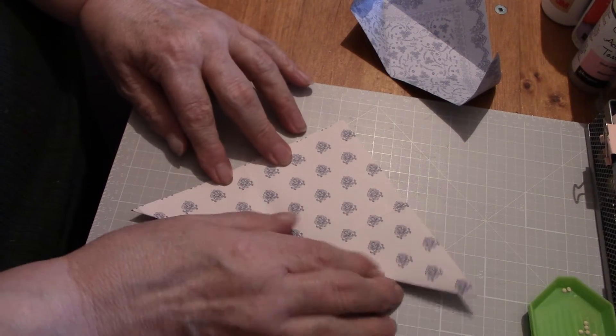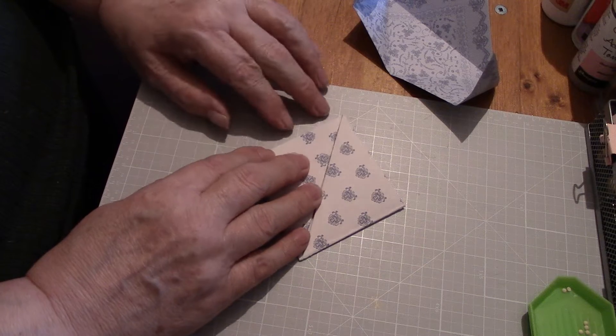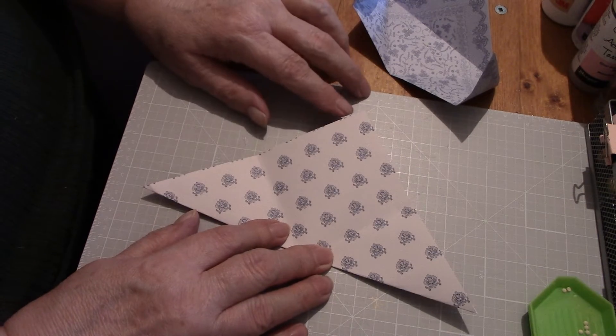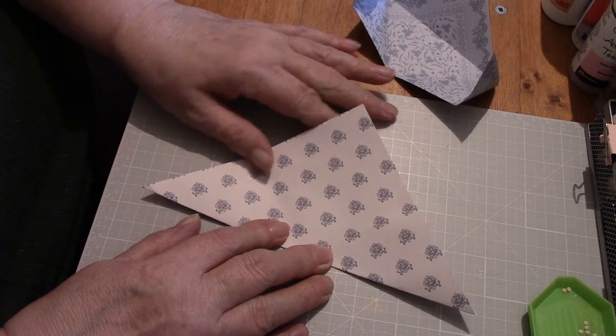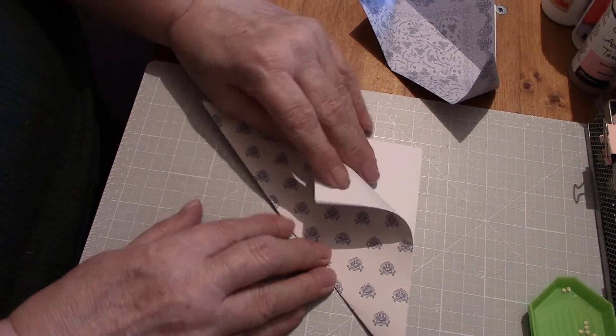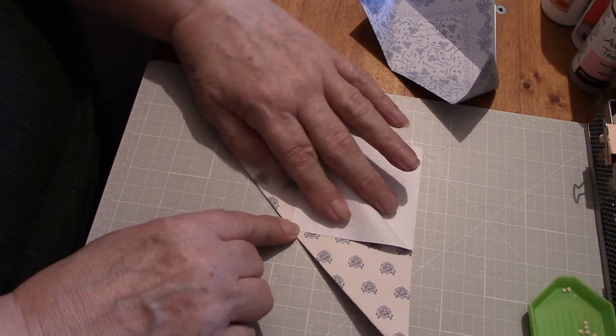So it's just corner to the top, corner to the top. Now you open it up and you just take one layer and you fold that right down to the bottom here.